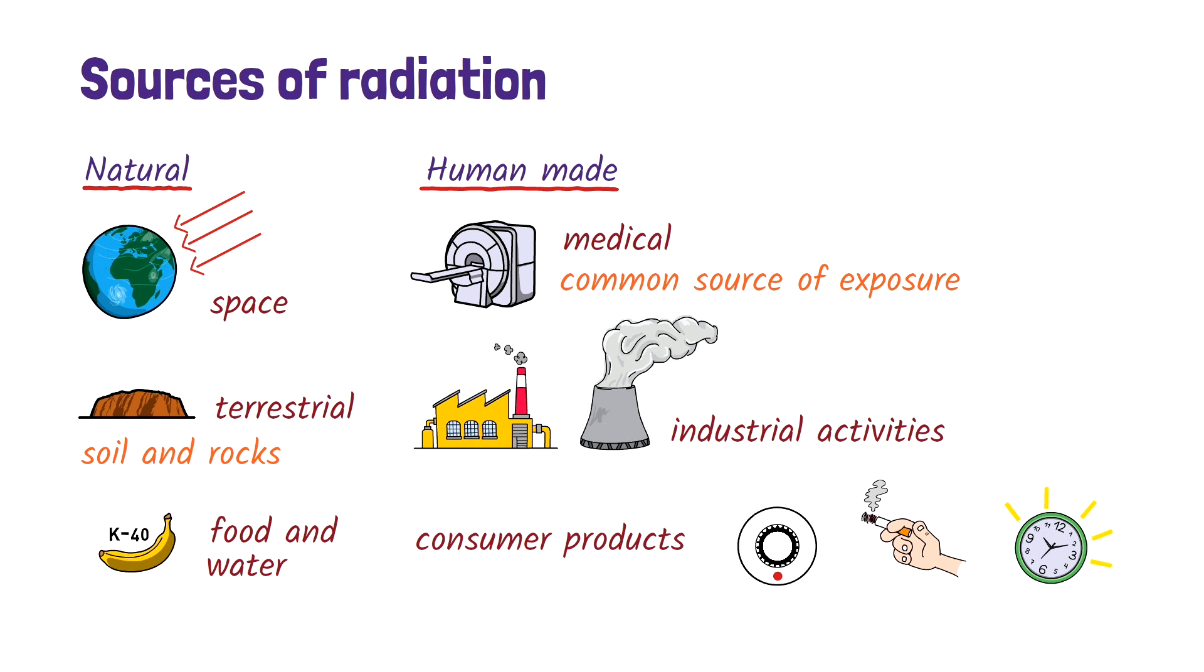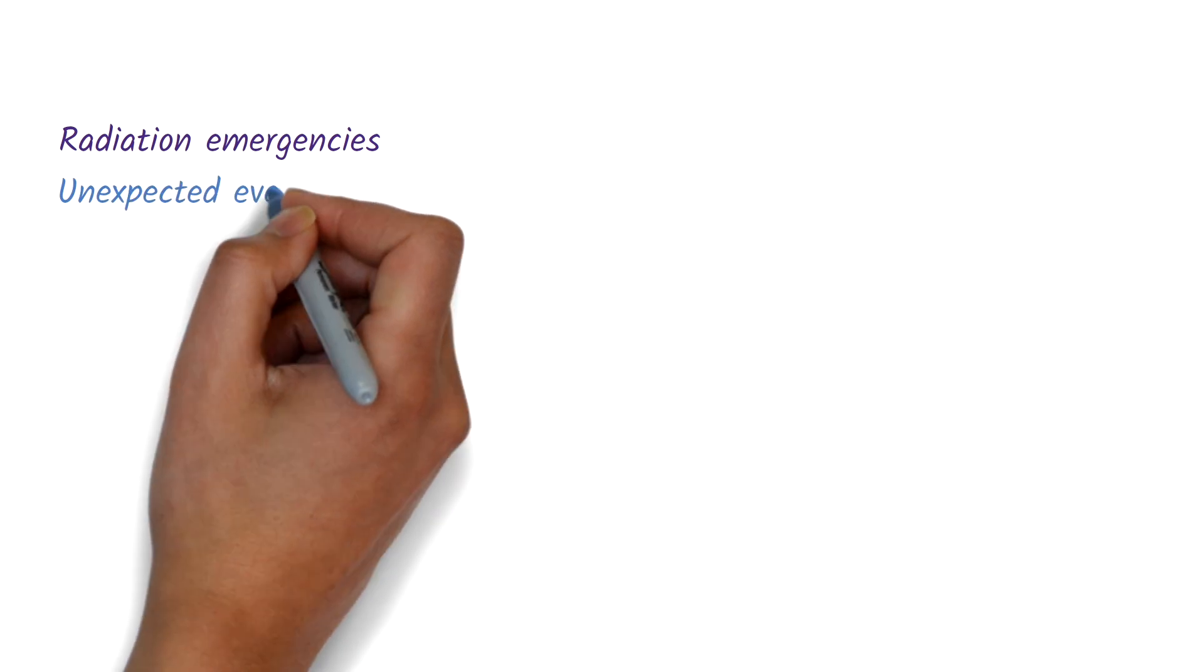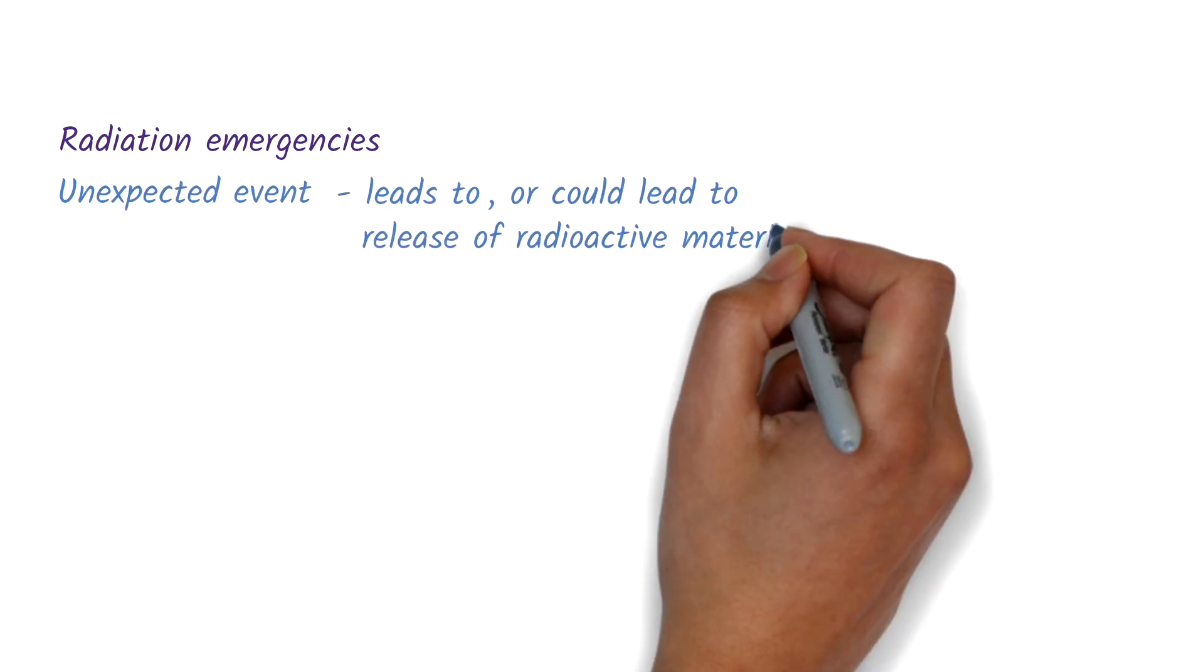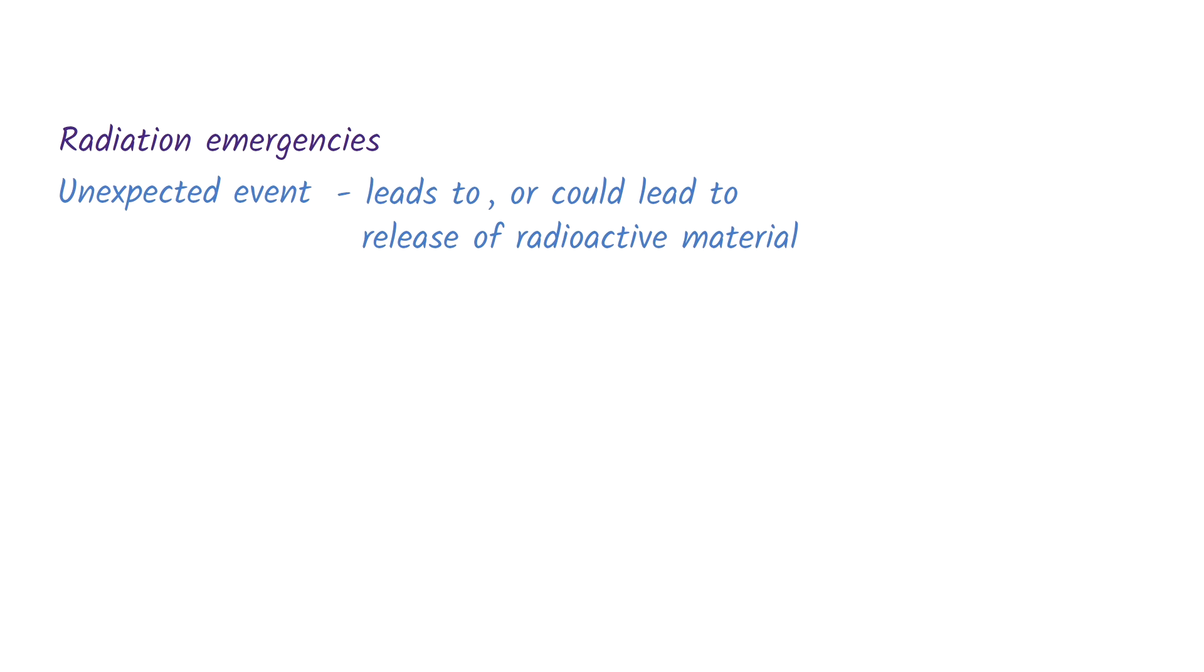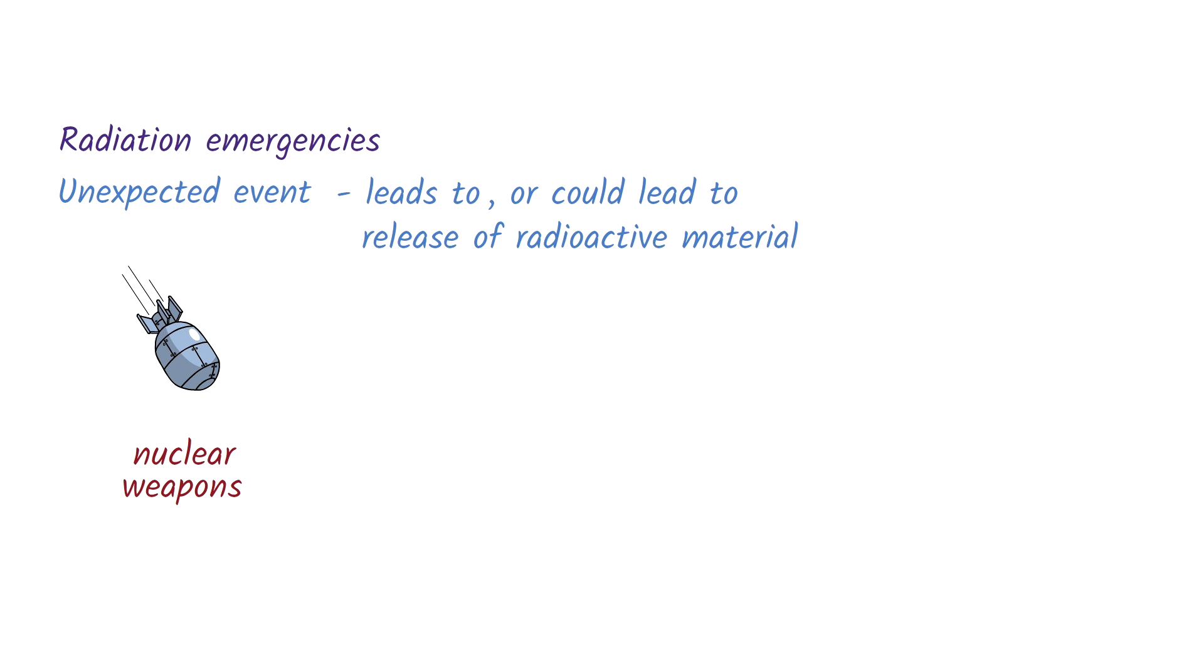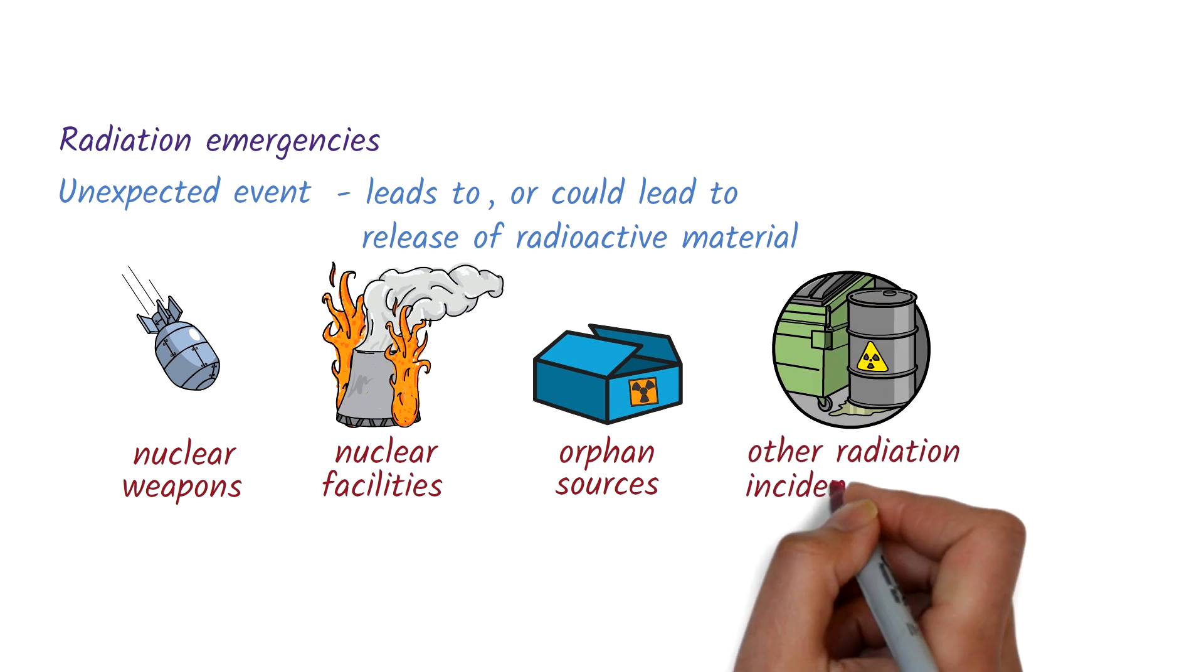A radiation emergency is any unexpected event that leads to, or could lead to, the release of radioactive material into the environment. This could happen in a number of ways, such as the use or testing of nuclear weapons, or accidents at nuclear facilities. It can also result from exposure to orphan sources, radioactive materials that have been abandoned, lost, or stolen, or from incidents in industry, research, transport, or medicine.